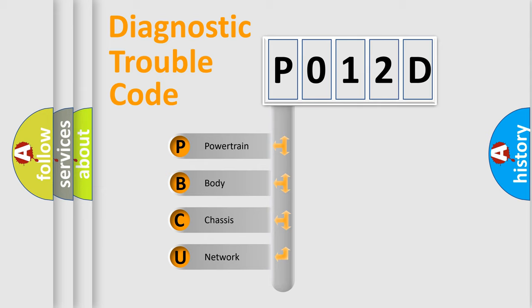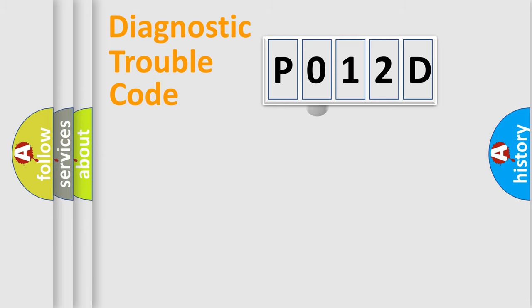We divide the electric system of automobile into four basic units: Powertrain, Body, Chassis, Network. This distribution is defined in the first character code.